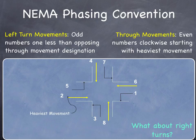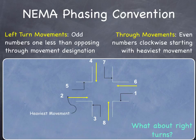One is in conflict with two, eight is in conflict with seven, six is in conflict with five, and three is in conflict with four — it's a standard way of representing the intersection. Right turns are not given their own number because right turns are protected. Anyone on phase eight who wants to go through can also make a right turn without conflict. Phase eight includes both through and right turns, as do phases two, four, and six.